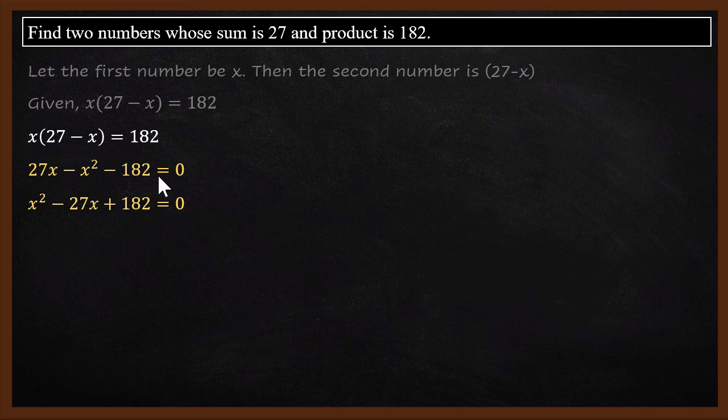Then if you multiply the whole thing by minus 1, you can make x squared minus 27x plus 182 equals 0.